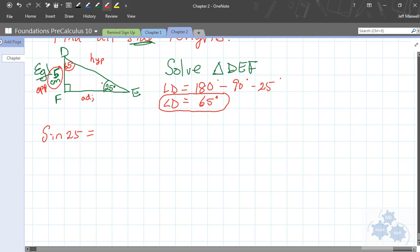Sine of 25, that's this angle right here, E, is going to be equal to the opposite over the what? Hypotenuse, right. So, opposite over hypotenuse. The opposite is five centimeters. And the hypotenuse is just the hypotenuse. We don't know that yet.